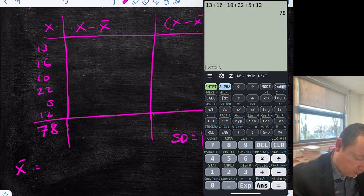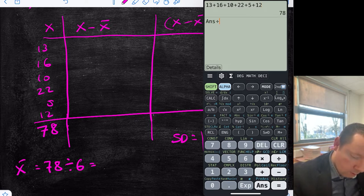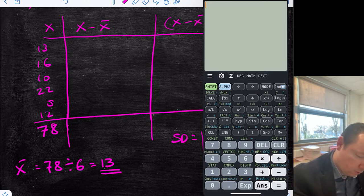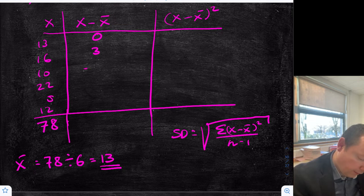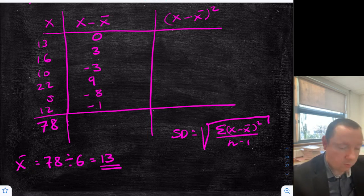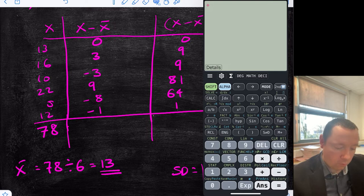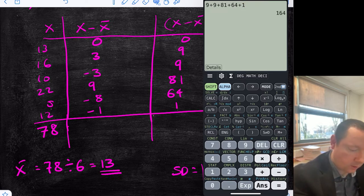Now going into the table — we take away 13 from each value in the middle column. That gives us 0, 3, minus 3, 9, minus 8, and minus 1. We then square each of those: 0, 9, 9, 81, 64, and 1. Once we have all those numbers we add them all up: 9 plus 9 plus 81 plus 64 plus 1 gives us 164. That is our key number — it goes in the top of our formula, divided by 1 less than the number we've got, which is 5.